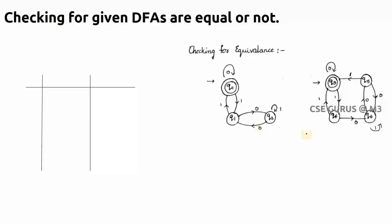Let us take two DFAs and check whether they are equal. The inputs are 0 and 1. We start with all pairs beginning from the initial states of each DFA. The initial state of the first DFA is q0 and of the second DFA is q3, so we write the pair (q0, q3). Now check: what is q0 on input 0 and q3 on input 0?